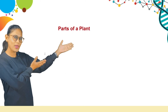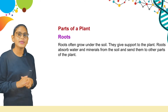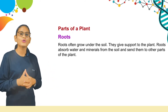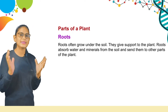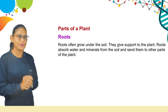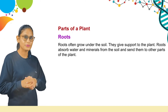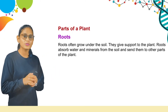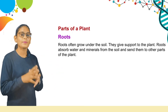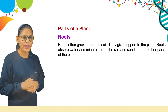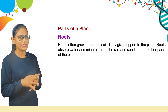Now, parts of a plant. The first part is roots. Roots often grow under the soil. They give support to the plant. Roots absorb water and minerals from the soil and send them to other parts of the plant. Students, roots grow inside the soil and provide water and minerals to the plant — and where do they get water and minerals from? From the soil.